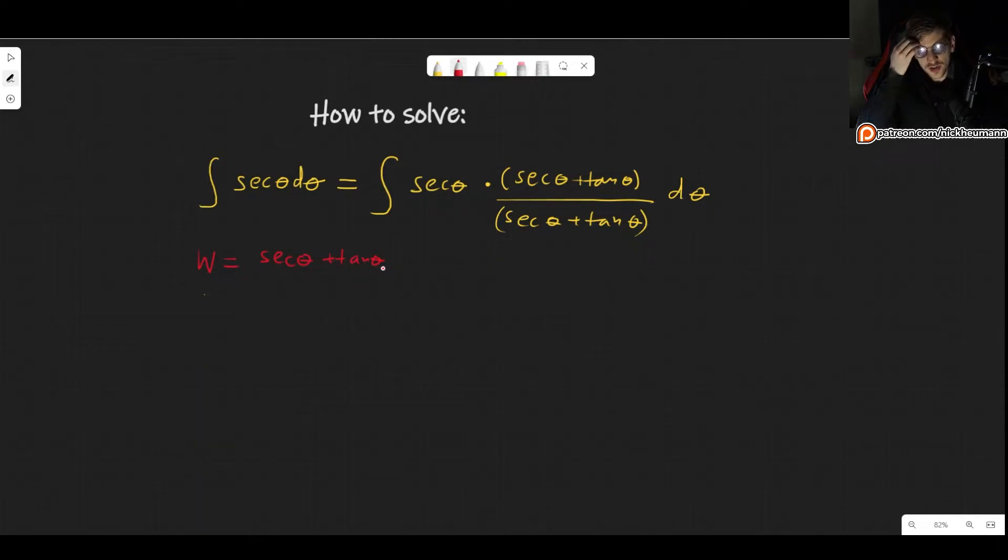Now you may be wondering, well then why did we even bother doing this entire thing? Why not just multiply by w? The reason is because now if we differentiate w we get dw is the derivative of secant of theta, which is the tangent of theta times the secant of theta plus the derivative of tangent of theta, which is secant squared of theta. And all of this, of course, multiplying d theta.